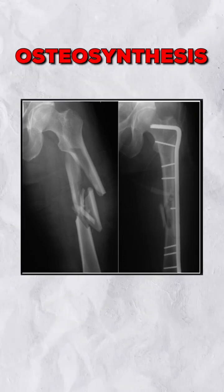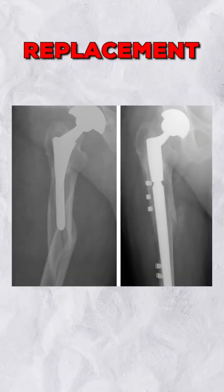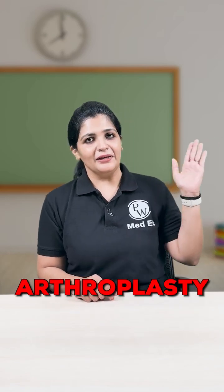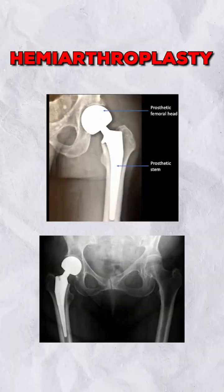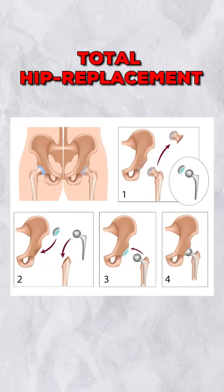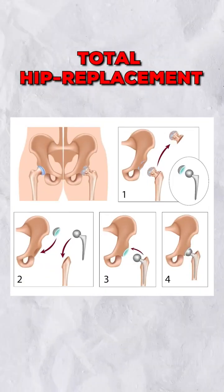Between 45 to 60, depending on comorbidities, you go for either osteosynthesis or replacement. The replacement is called arthroplasty — it can be a hemi-arthroplasty, which means only replacing the femoral head, or a total hip replacement, which involves replacing both the acetabulum and the femoral head.